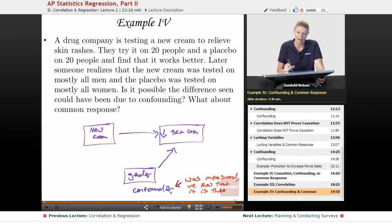So it's a confounder, not a lurking variable, because we did measure it. We know it's there. And then we're going to call this confounding rather than common response, because gender isn't causing the cream. It's that we've assigned it differently. So it's just kind of there in the background to affect how the skin reacts to the cream applied.